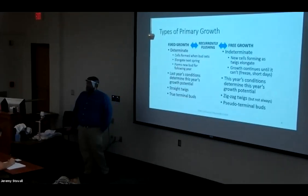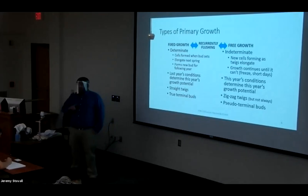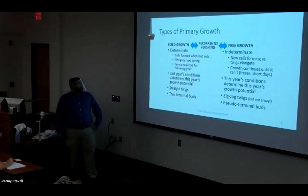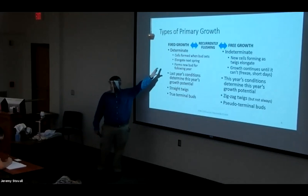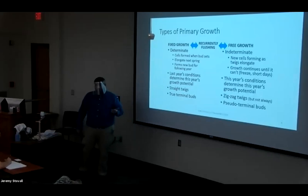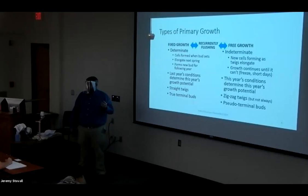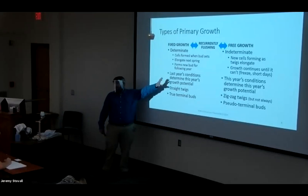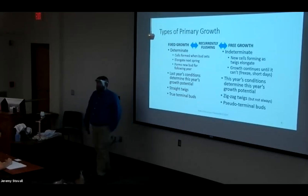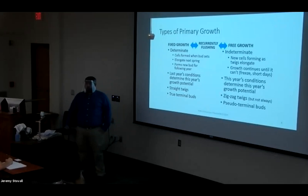There are three different types of primary growth to learn about, and these will have morphological differences we can actually observe in the field. On the left, I have fixed growth, also called determinant growth. Basically, cells are formed when the bud sets, then the bud overwinters. When it breaks bud in the spring, it's all those cells that formed at the end of the last growing season. Last year's conditions determined how well that bud was set up. These twigs tend to be straight and tend to have true terminal buds.